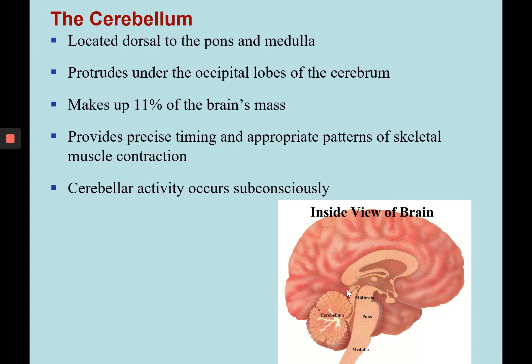The cerebellum is able to receive information from the sensory systems, the spinal cord, and other parts of the brain, and then regulate motor movements. The cerebellum is able to coordinate voluntary movements such as posture, balance, coordination, and speech, resulting in smooth and balanced muscular activity.